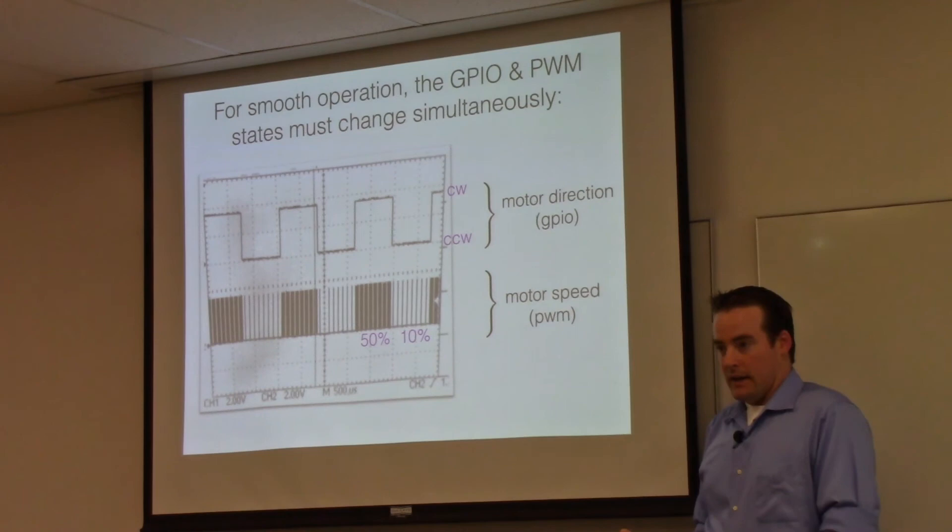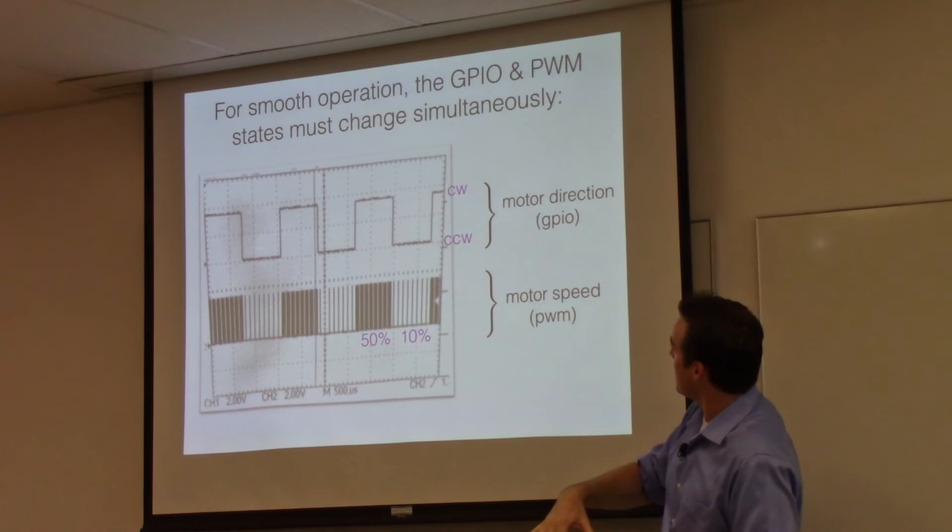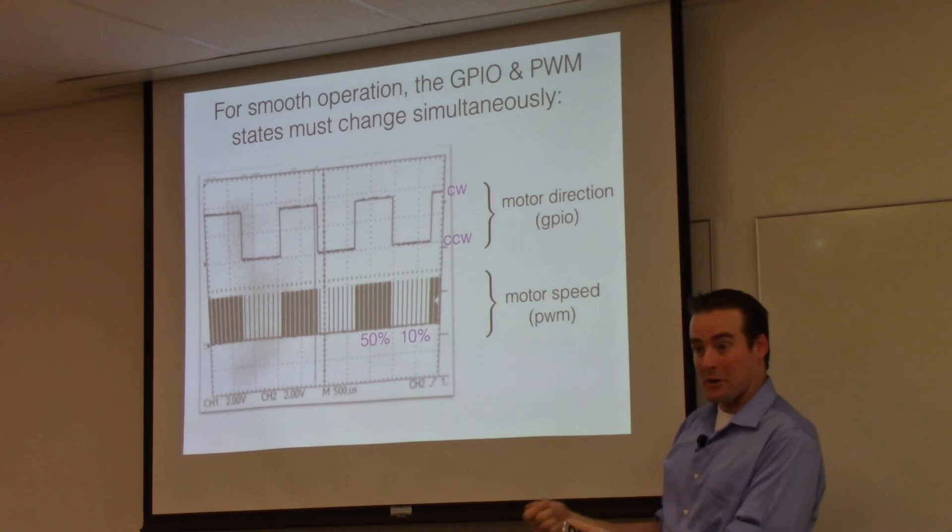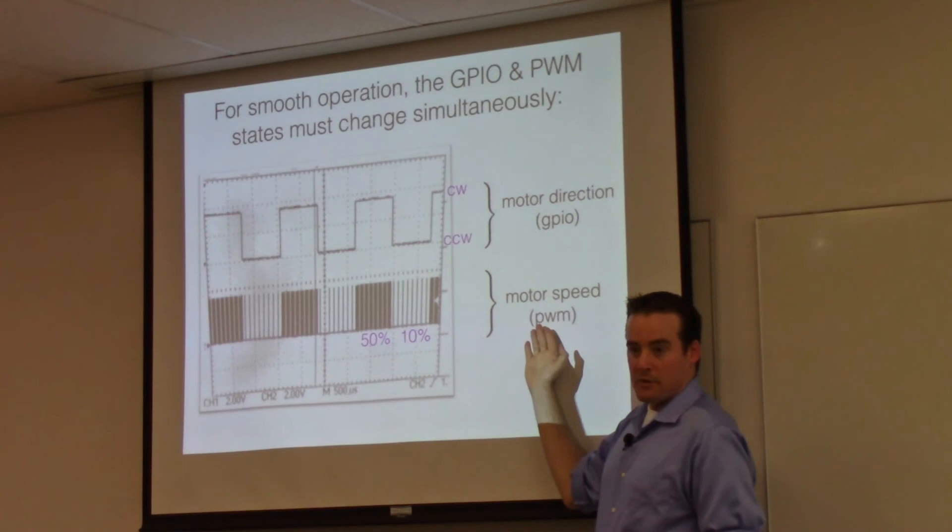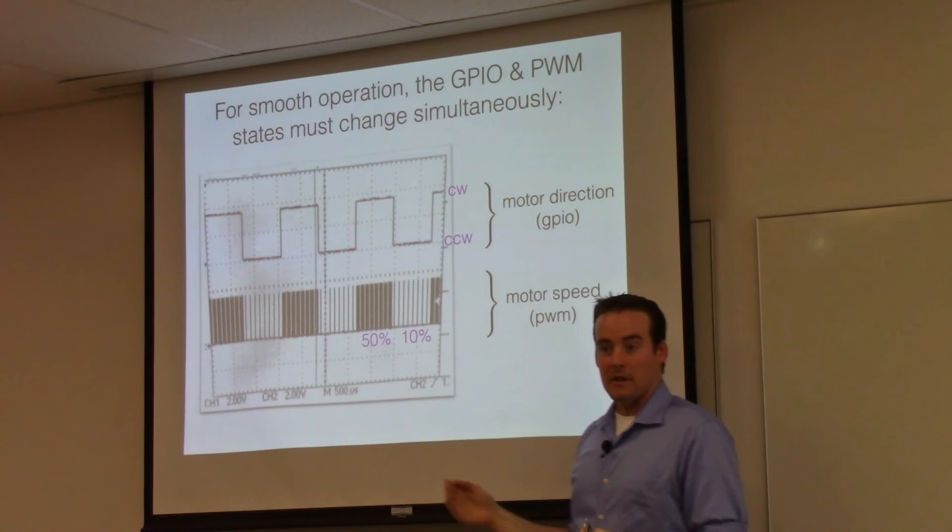That motor controller has two inputs. It has a pin that governs the direction of the motor, either clockwise or counterclockwise, controlled by the general purpose I/O peripheral on the computer. It also has a motor speed input that you jiggle up and down with a pulse width modulated signal. The duty cycle of that PWM signal tells it essentially how fast to go. 50% means halfway to full throttle. 10% means only 10% full throttle.